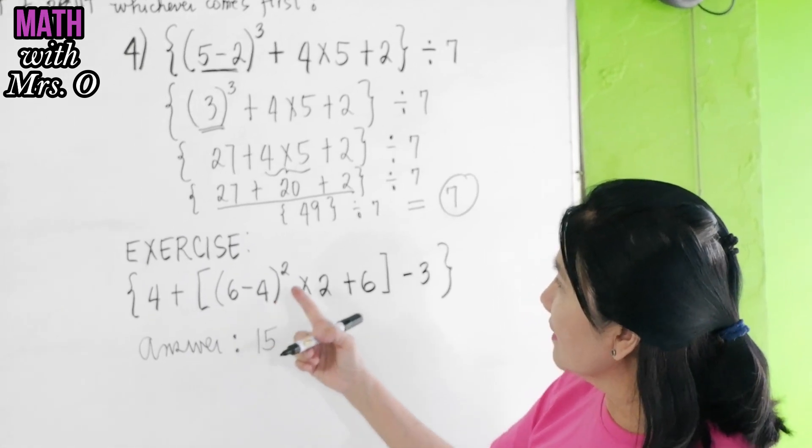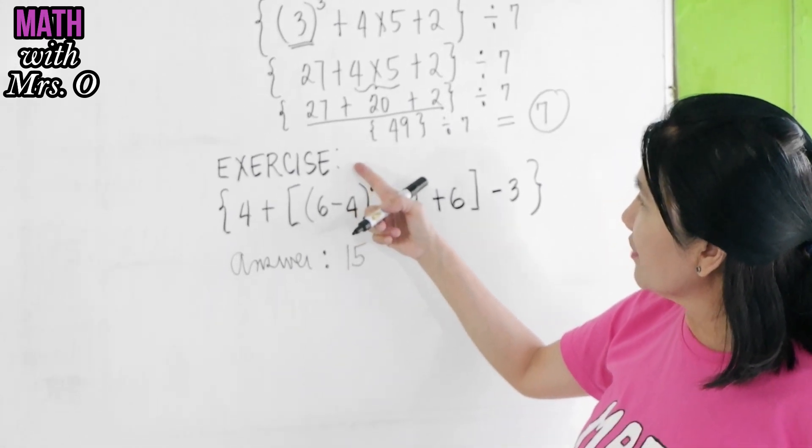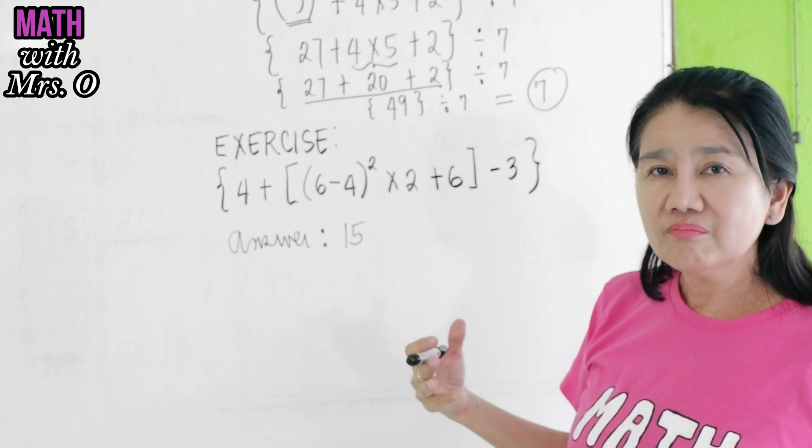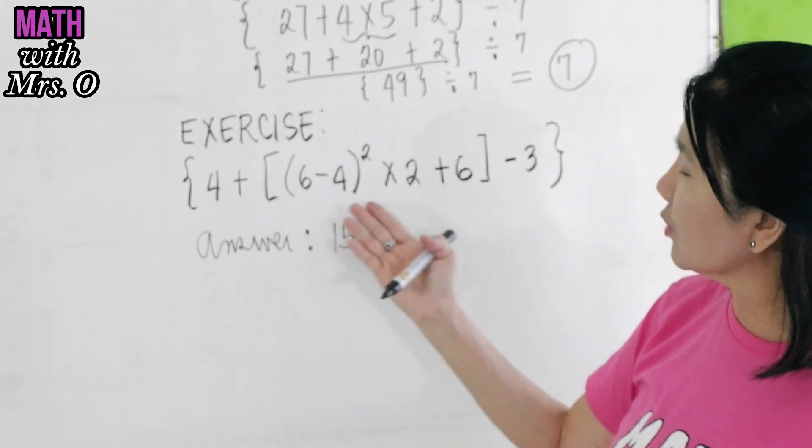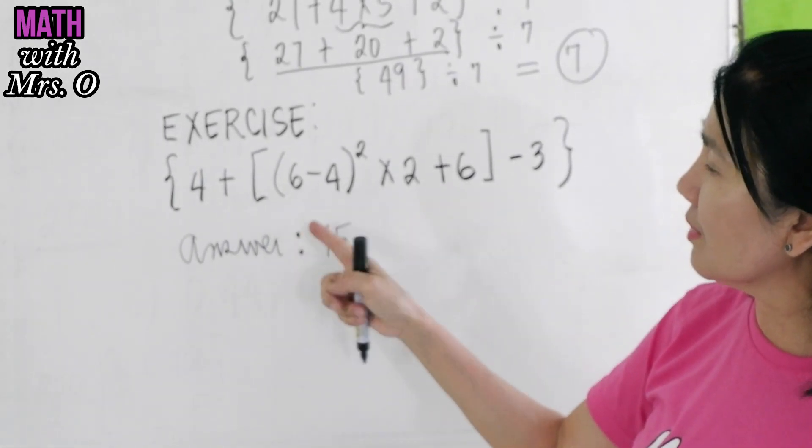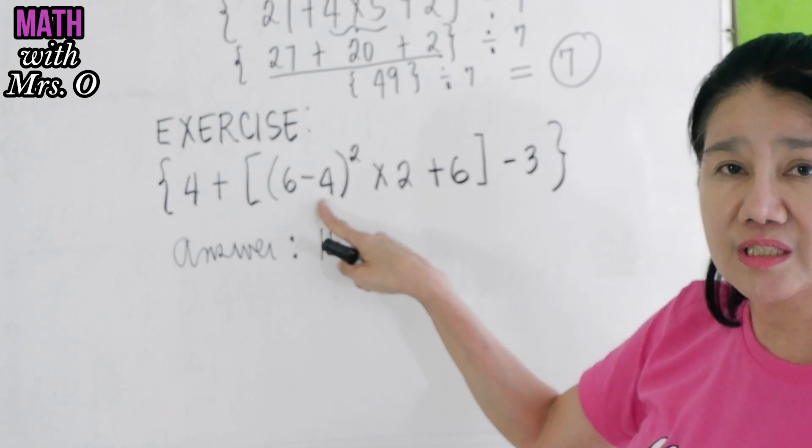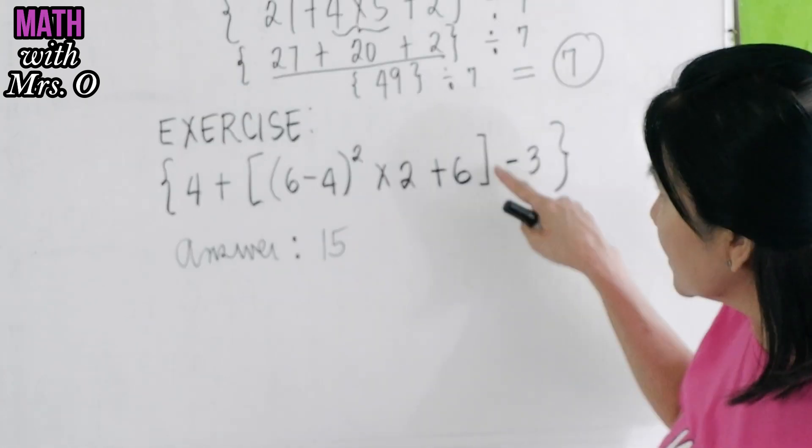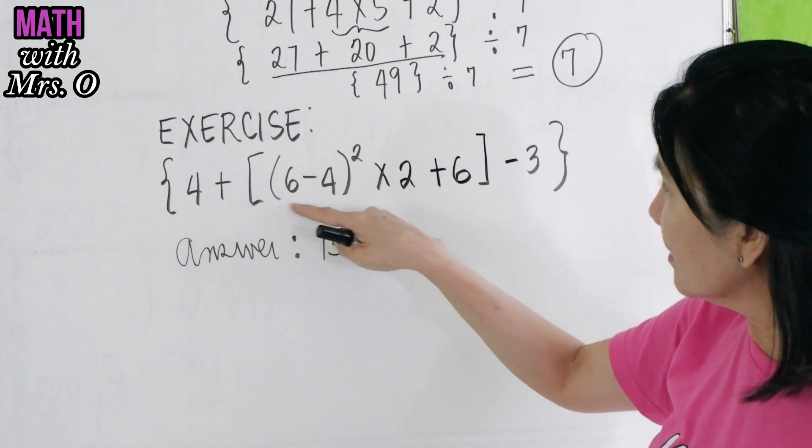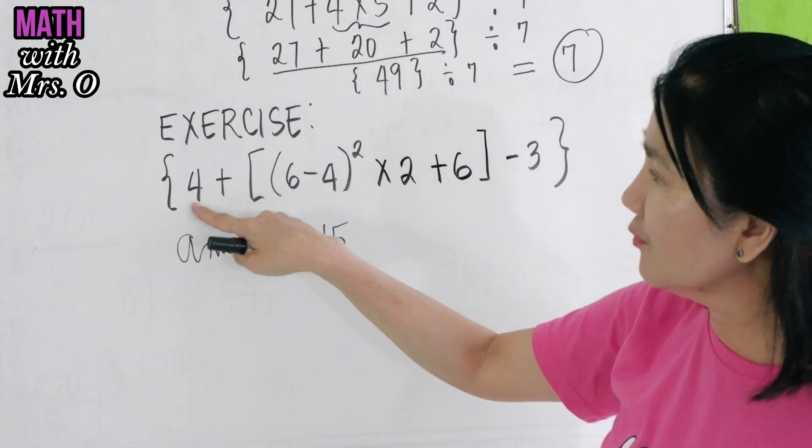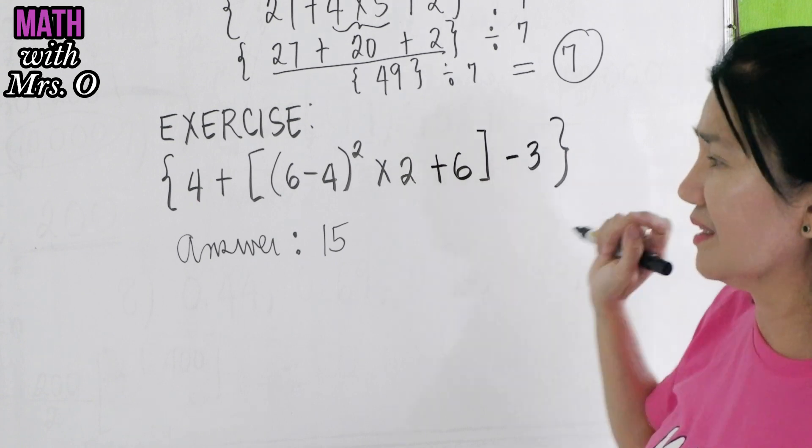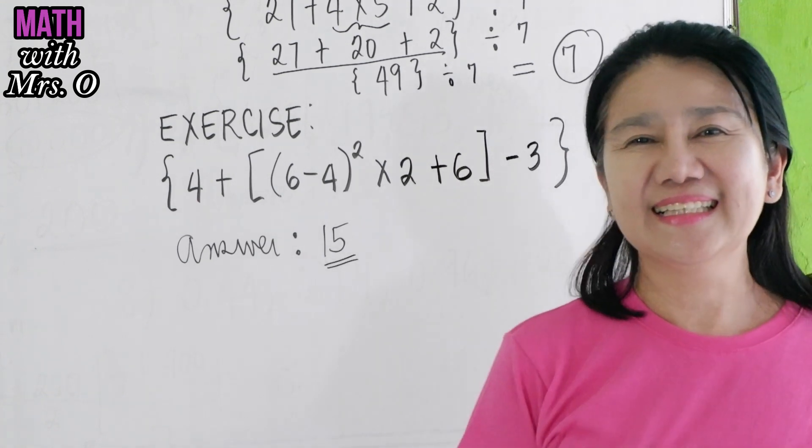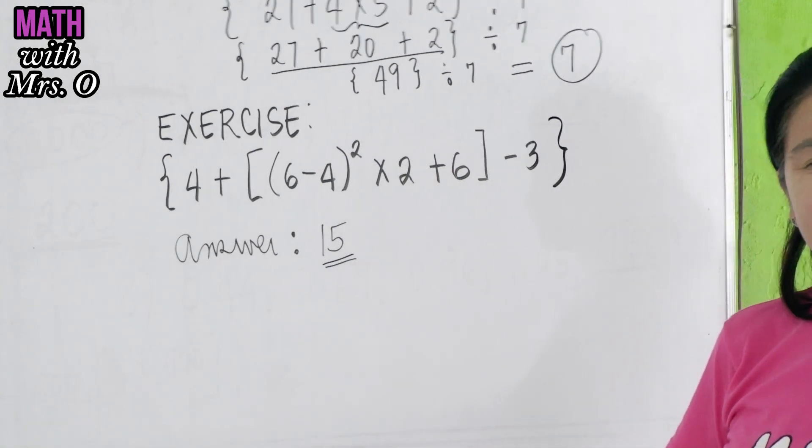So, I provided here an exercise, which you can do at home. Remember here that we have an innermost grouping. You have to do 6 - 4 first, and then square it. Then, simplify all of this first. Before adding 4 and subtracting 3. You should get an answer of 15. Do it so you'll have practice.